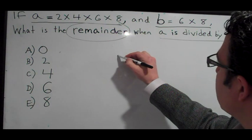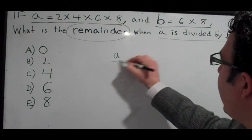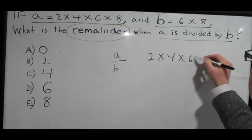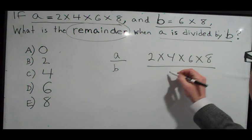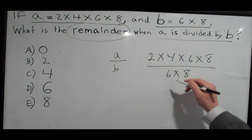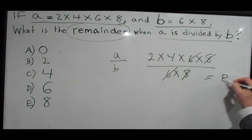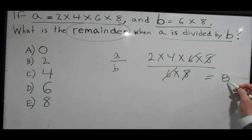Now you're going to solve the question really carefully. You're going to clearly take A and divide it by B. So we're going to say 2 times 4 times 6 times 8 divided by 6 times 8, which is B. We're going to cancel, and then we're going to solve and see that when A is divided by B, you get 8.